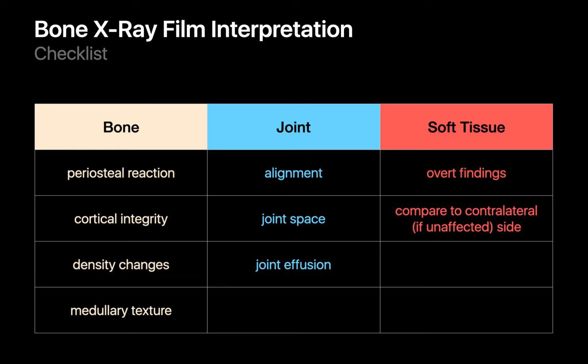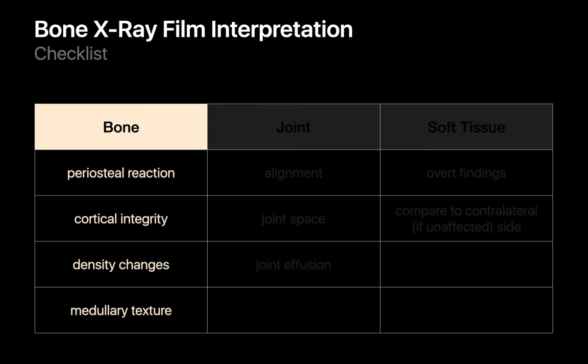When you're interpreting a bone x-ray image, try approaching it conceptually as three tasks: bone assessment, joint assessment, and soft tissue assessment. When assessing bone, four things to check for will be periosteal reaction, cortical integrity, unusual density changes, and intact medullary texture.